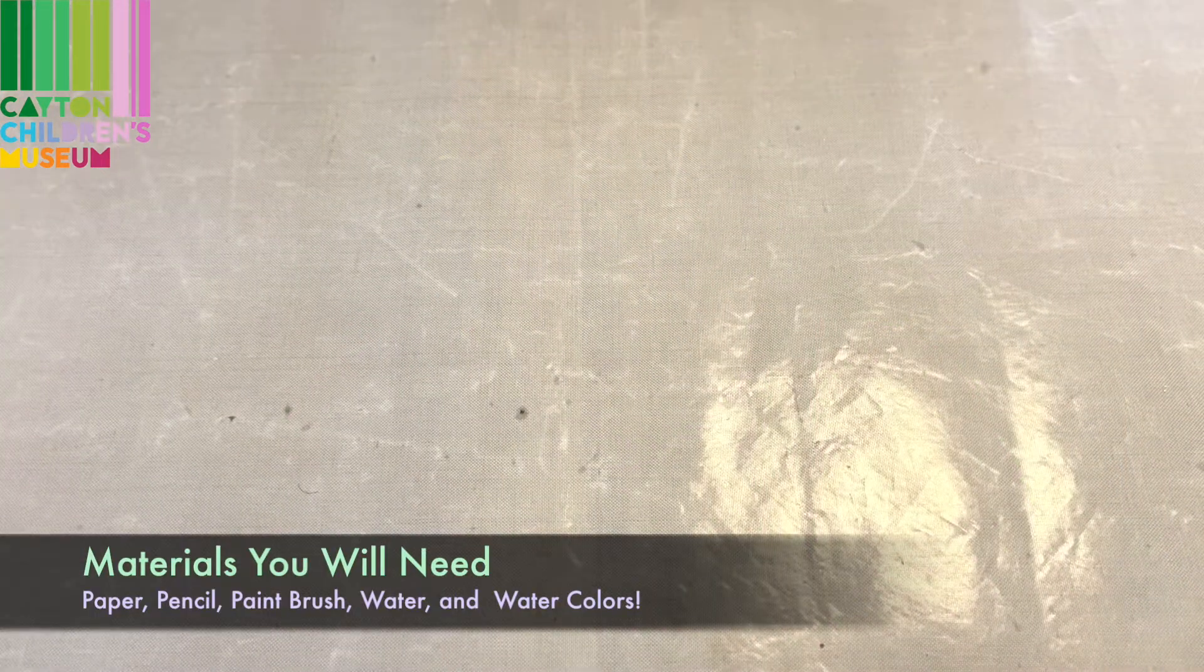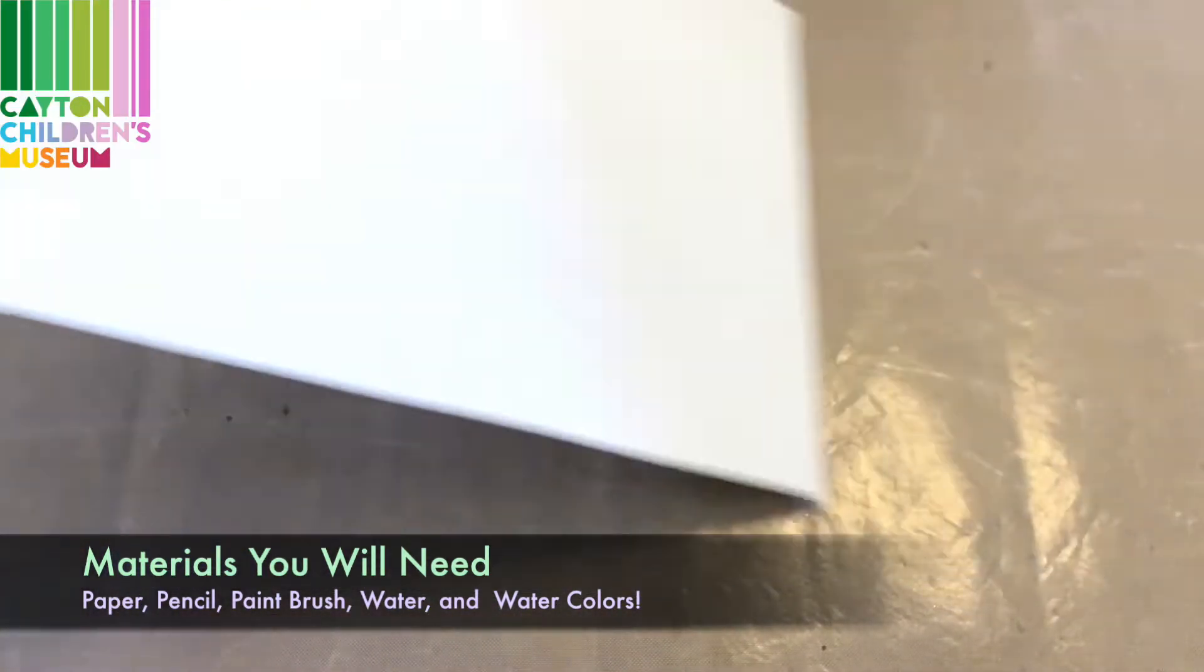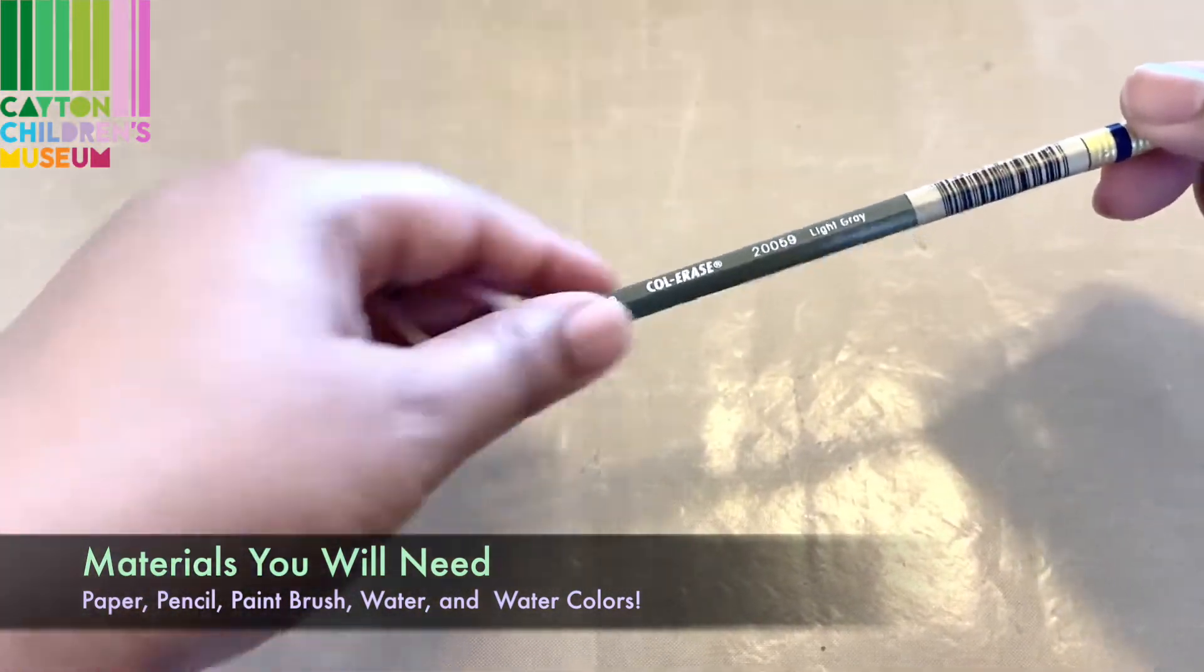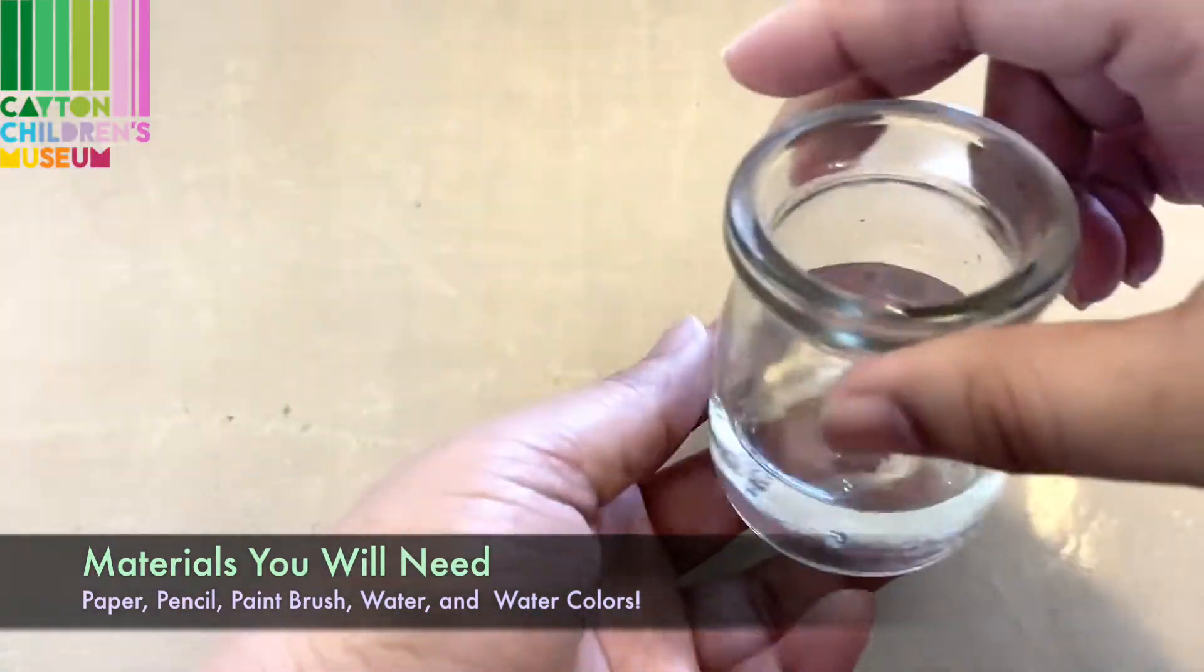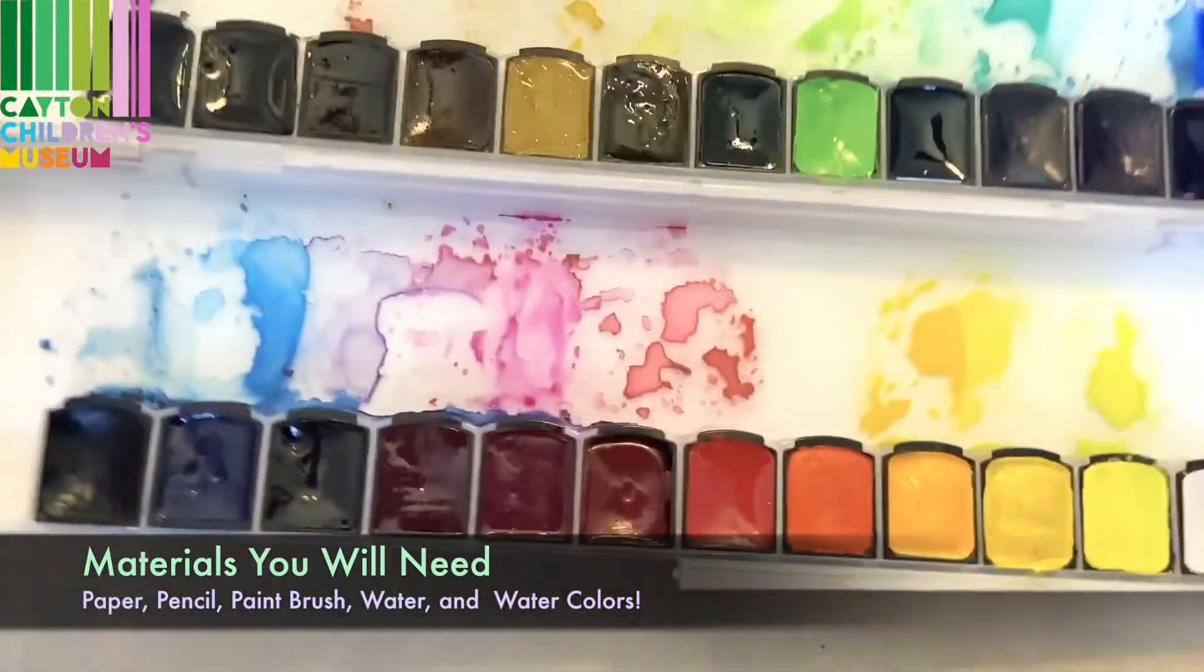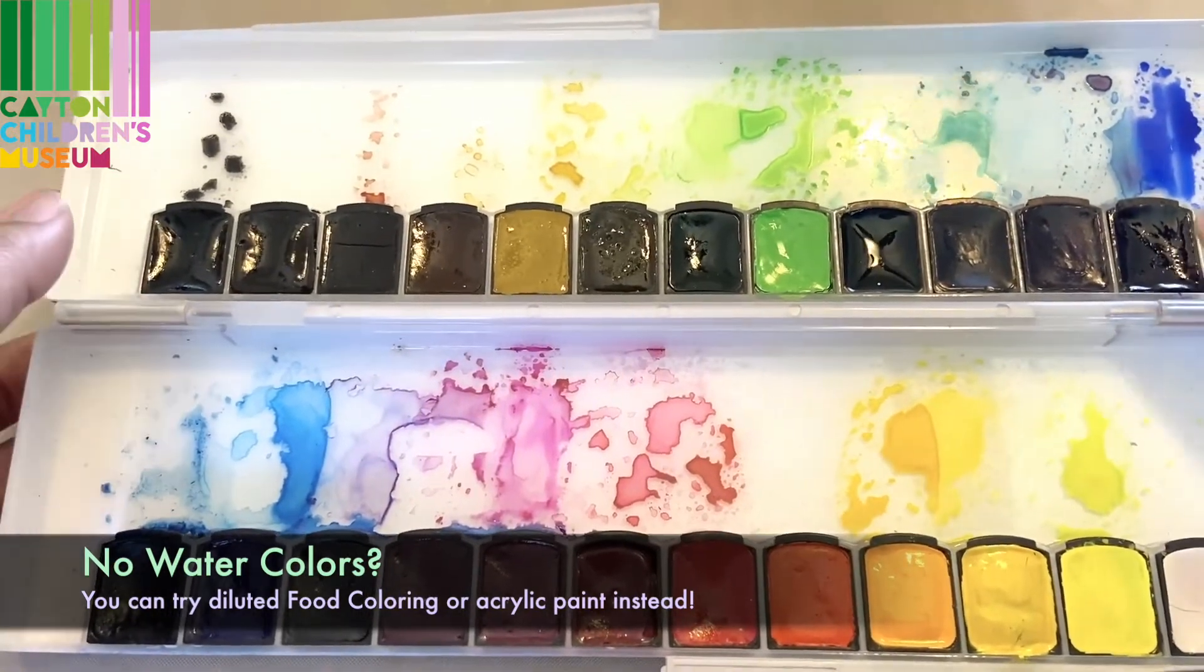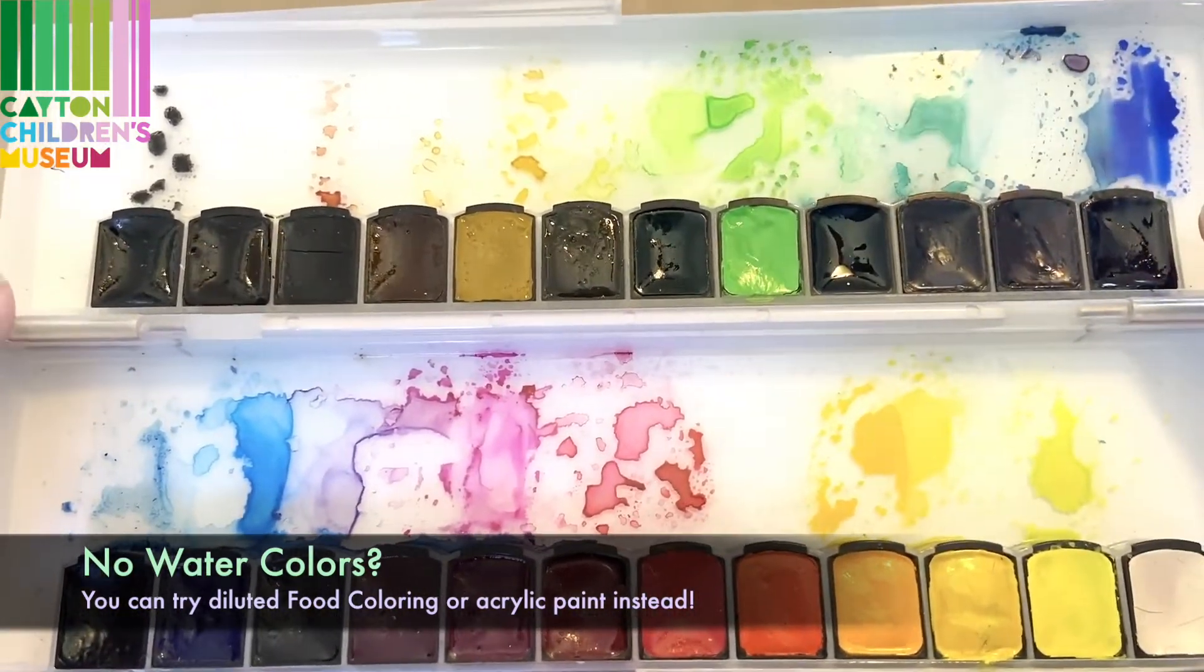Let's get started. For today's project you'll need some paper. Today I'm using watercolor paper. You'll want to grab a pencil of some sort, a paintbrush, a container of water, and also some watercolor paints. And if you don't have watercolor paints but you have acrylic, you can try watering that down or even using diluted food colors if you have that on hand.